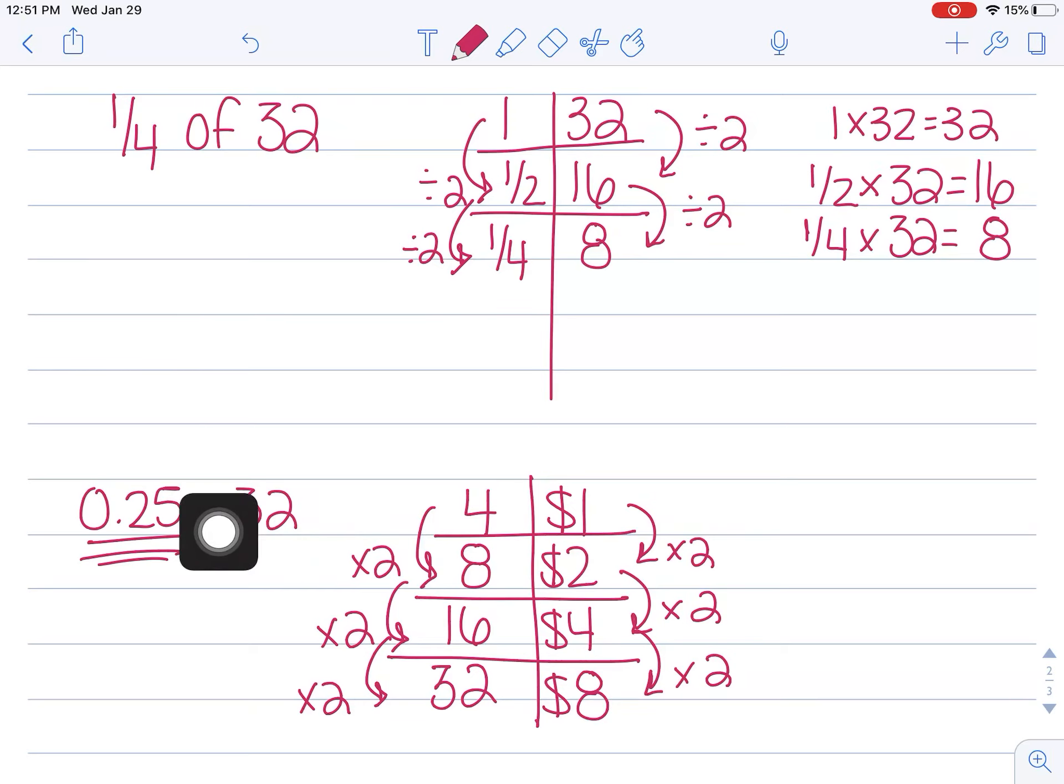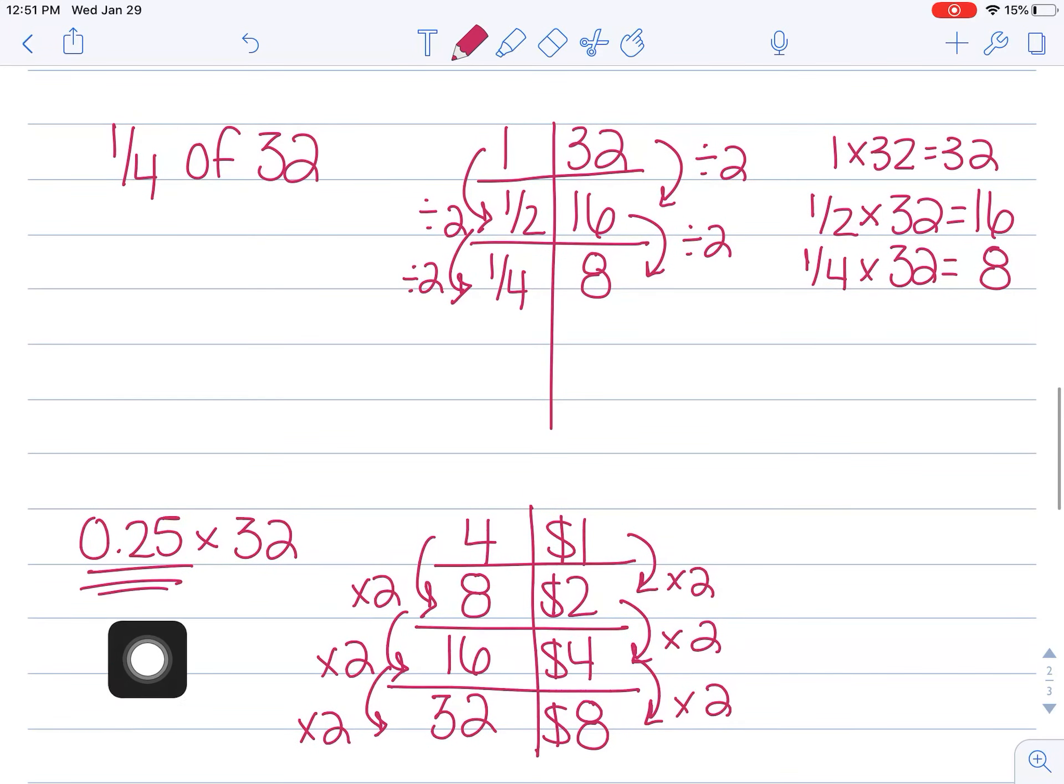So I essentially have the same answer, right? A fourth of 32 is the same as 0.25 times 32. They visually look different, but I want you to be thinking about these numbers as money when possible, if it helps you connect. And if you're feeling really confident with your fractions and your ability to break down those fractions and to simplify them and make them smaller and multiply them, then I definitely want you to be able to do that because you have to have all these skills.